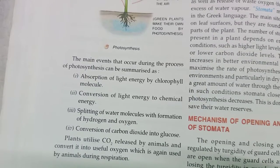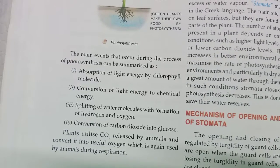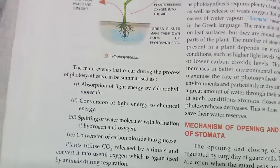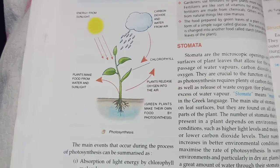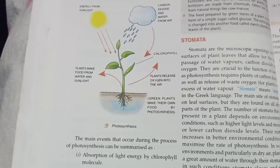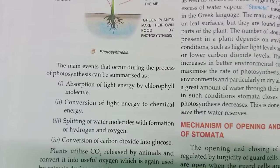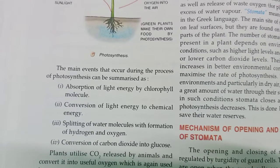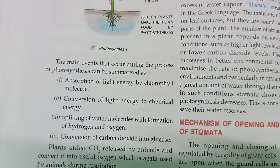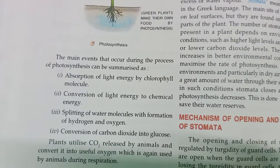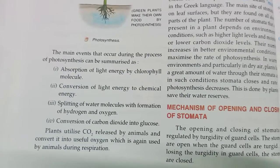Number two: conversion of light energy to chemical energy — the plant takes light energy from the sun and changes it into chemical energy by making food. Number three: splitting of water molecules with formation of hydrogen and oxygen. Number four: conversion of carbon dioxide into glucose. These are the main events that occur during the process of photosynthesis.